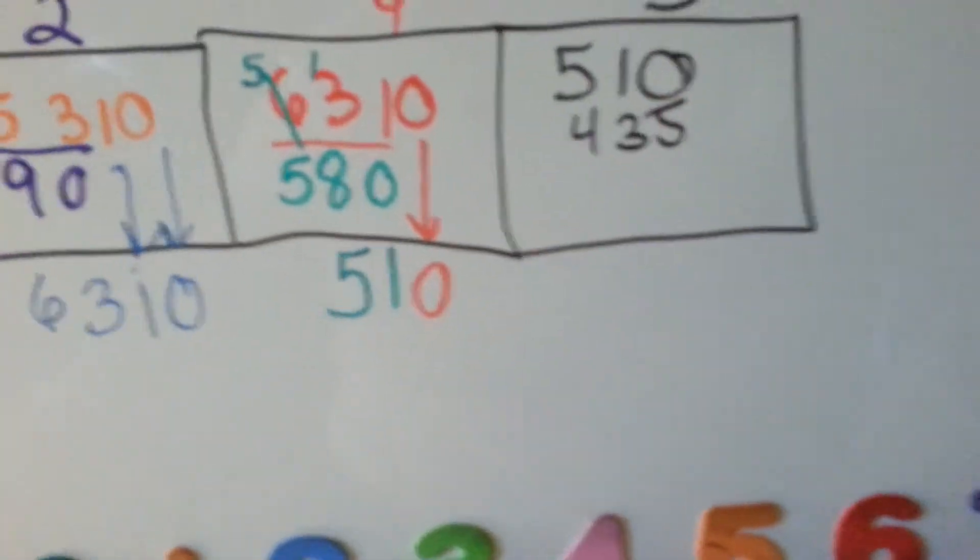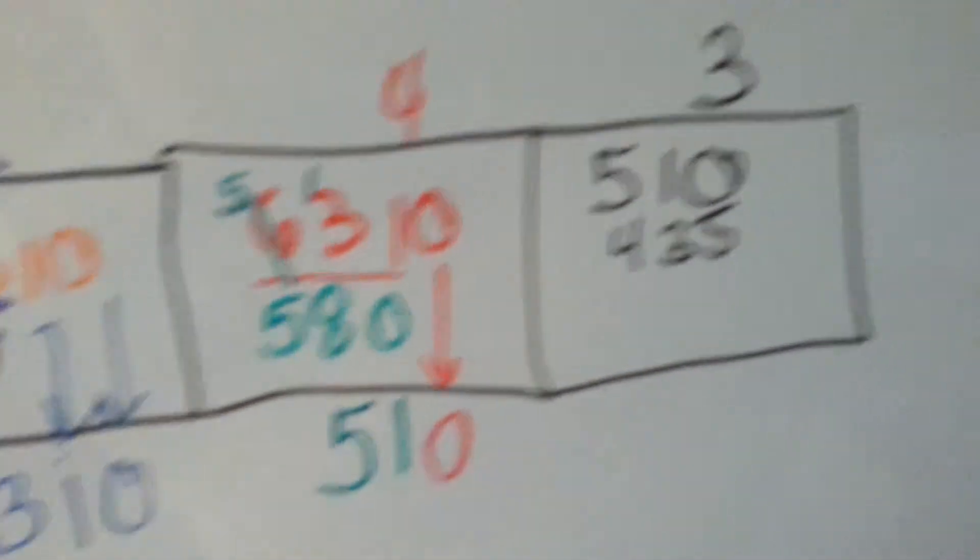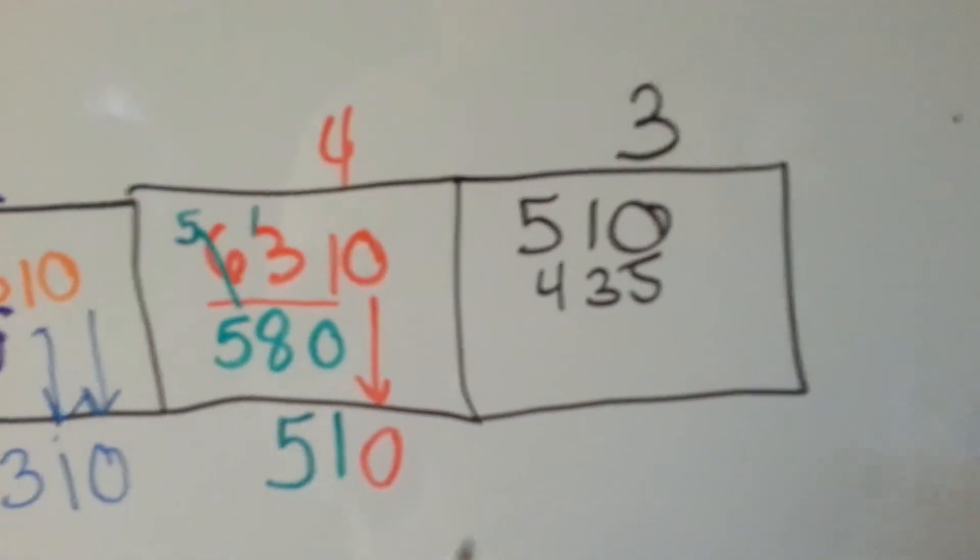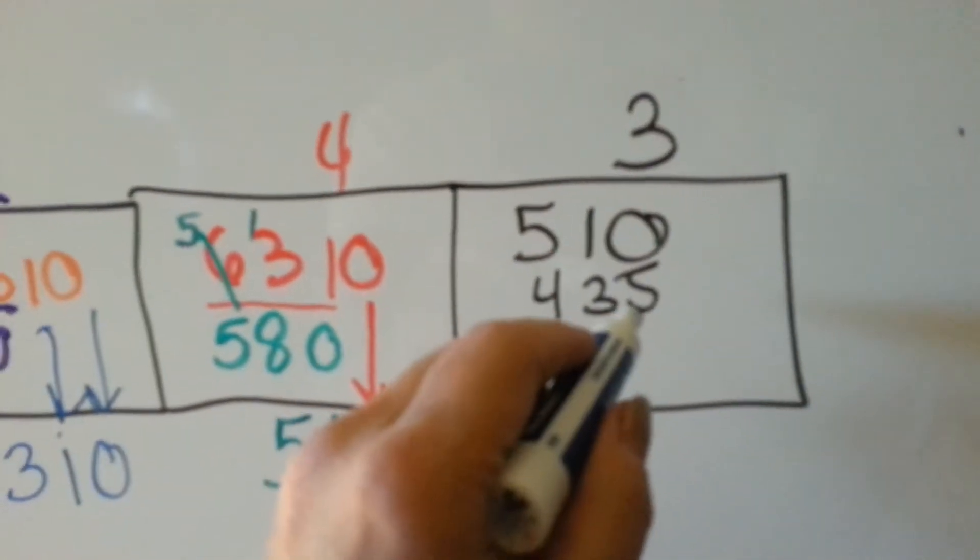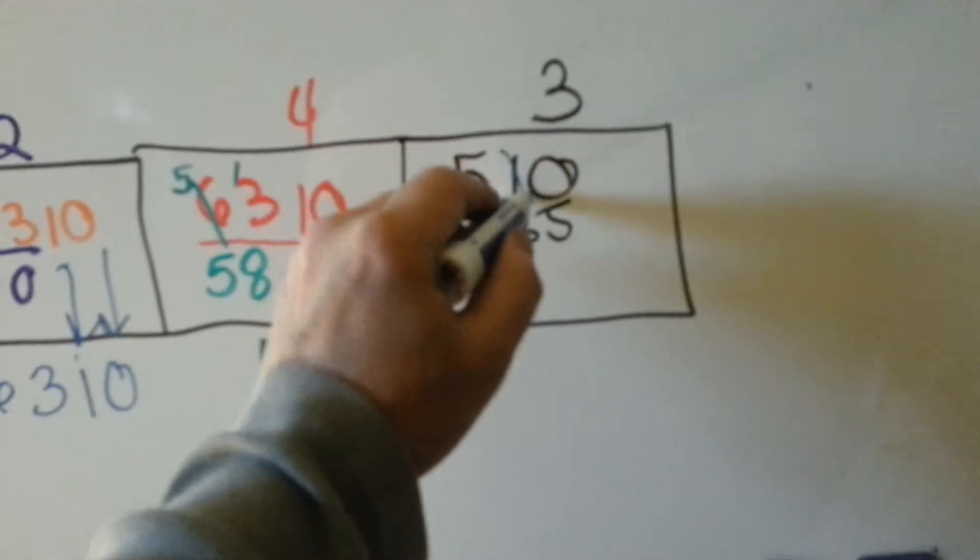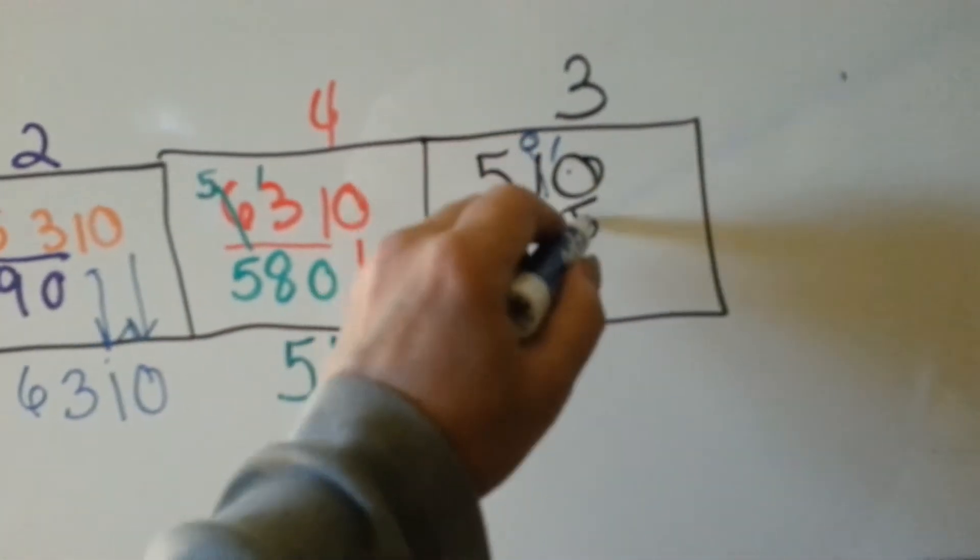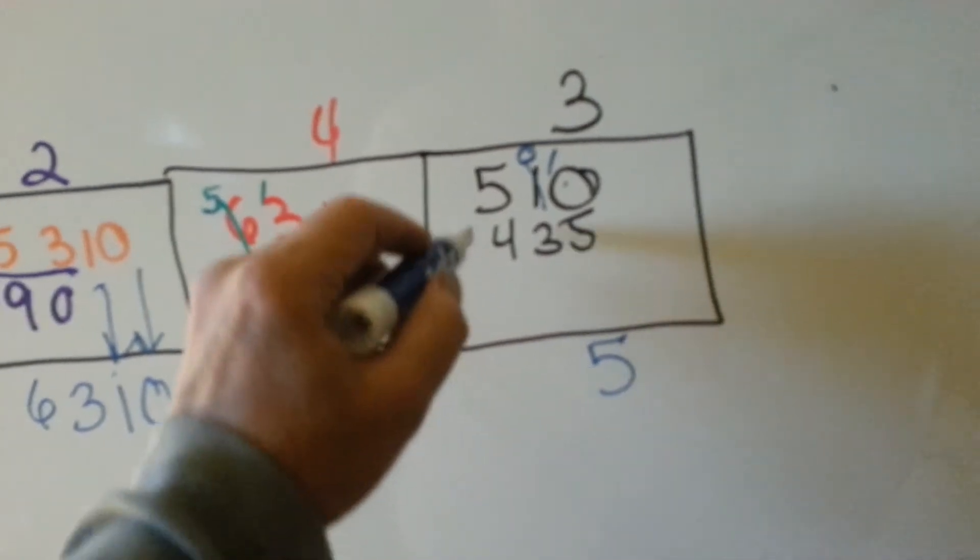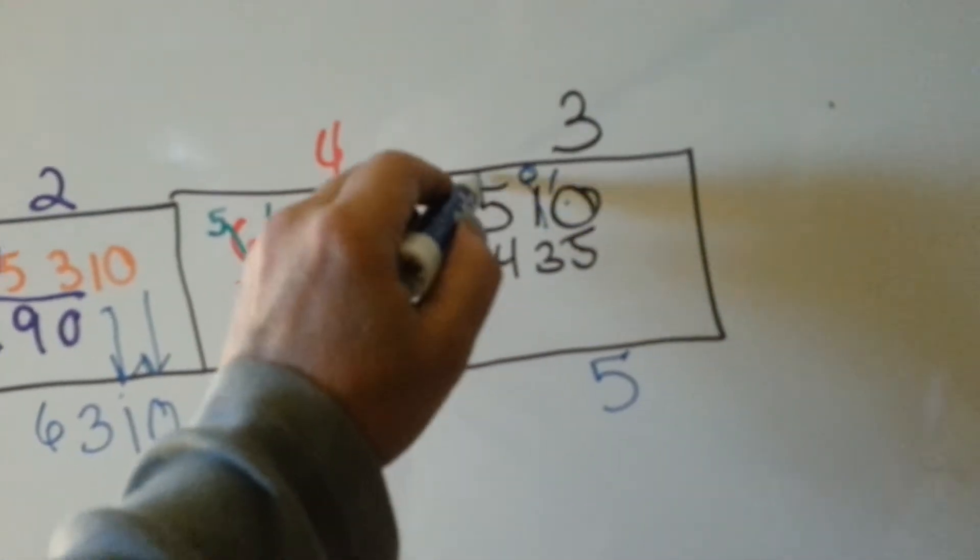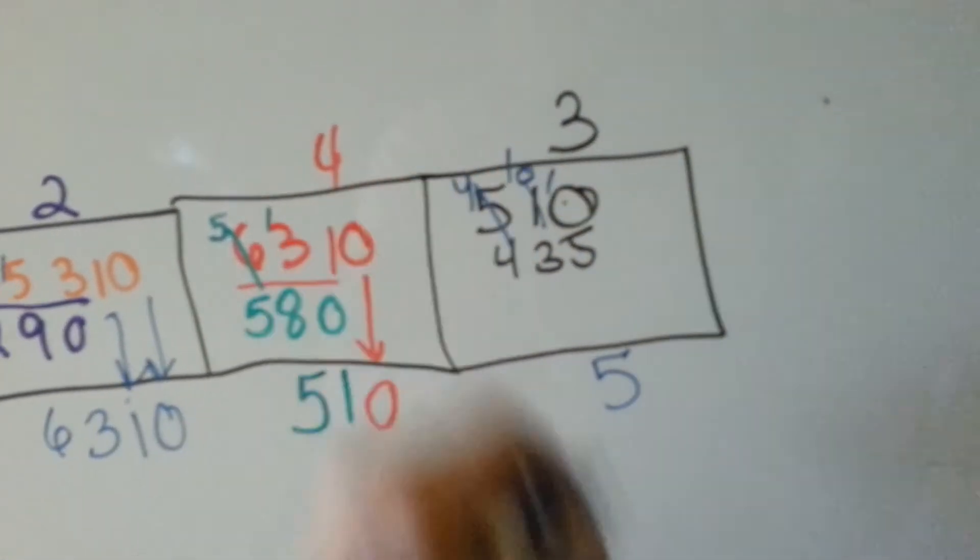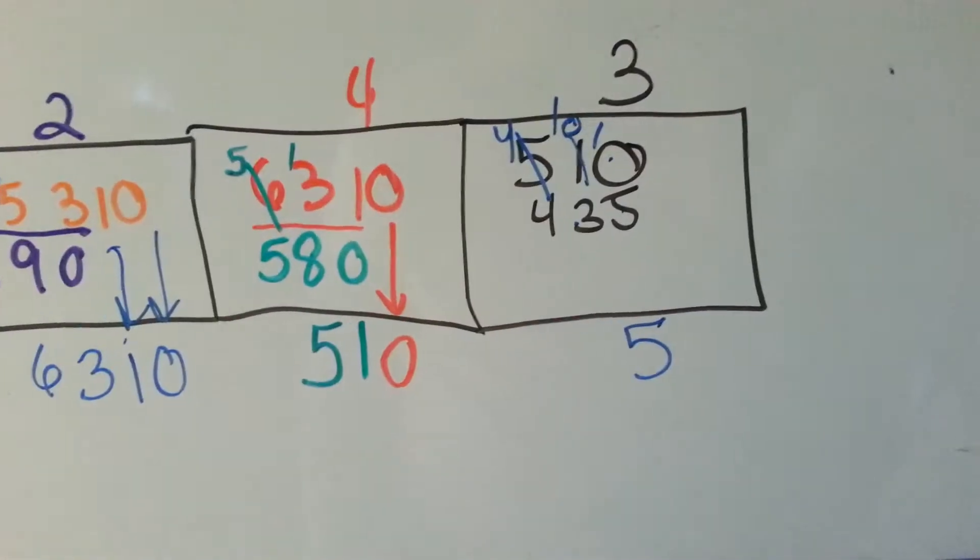So, now we can do our subtraction, right? Can you have 0 and take 5 away? Nope. So, we've got to cross this out. It becomes a 0, and the 0 becomes a 10. 10 take away 5 is 5. 0 take away 3 can't do it, so that becomes a 4, and that becomes a 10. 10 take away 3 is 7.